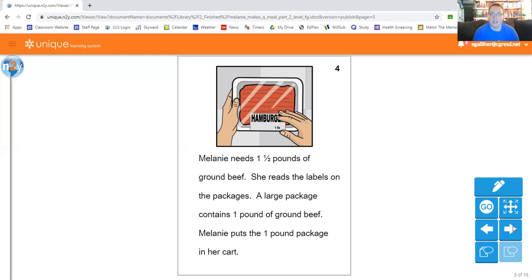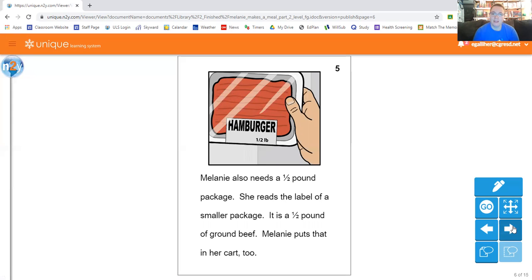No, not really quite enough, right? So let's see what she does. Melanie also needs a half pound package. She reads the label of the smaller package and it is a half pound of ground beef. Melanie puts that in her cart too. So nice. She found one that's a half a pound and so with the one that's a pound and the one that's a half pound, that's one and a half pounds of ground beef and that's just what she needs. Perfect.